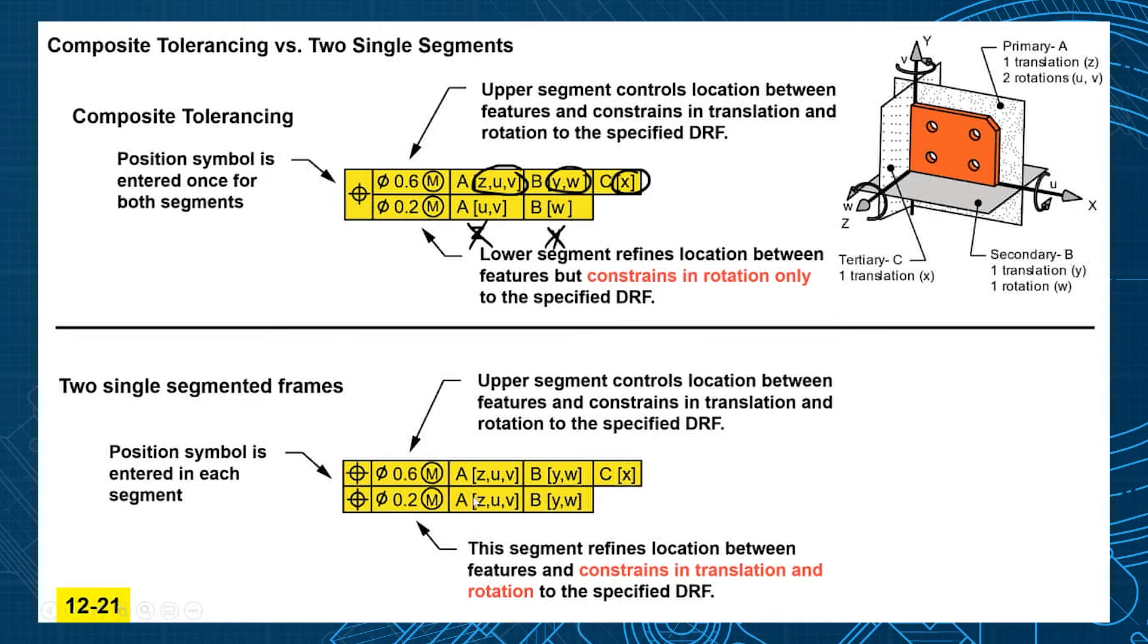And that's different than two single segments which will have normal rules apply. It constrains any degree of freedom it possibly can—translations and rotations.